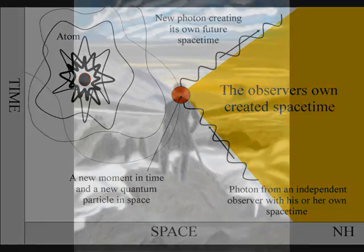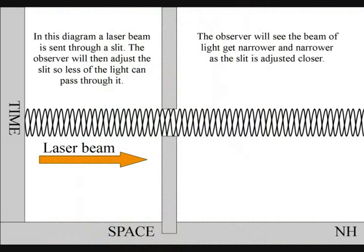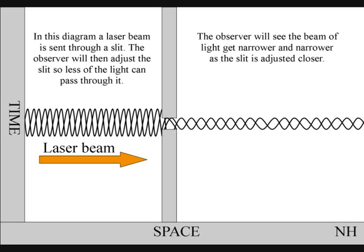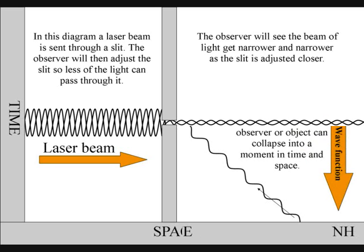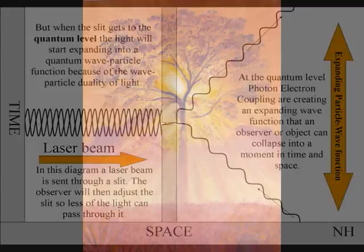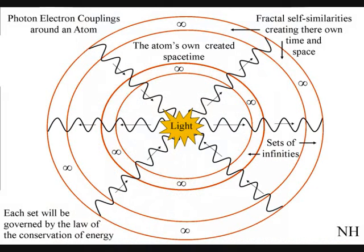This can explain what the observer actually sees. In this diagram, a laser beam is sent through a slit. The observer will adjust the slit so less of the light can pass through it. The observer will see the beam get narrower and narrower as the slit is adjusted closer. But when the slit gets to the quantum level, the light will start expanding into a quantum wave-particle function. When this wave function comes in contact with an object or observer, it will collapse into a new moment of time and space. In this way, creation is being created continuously.